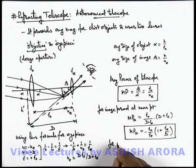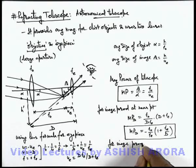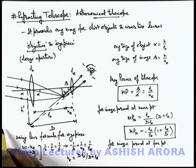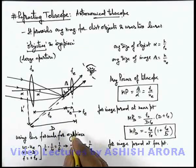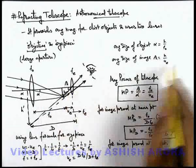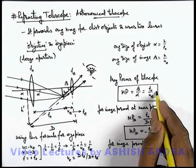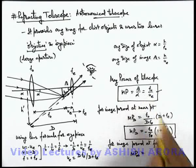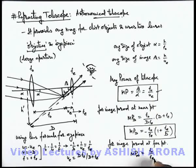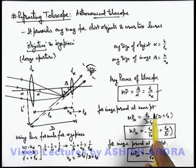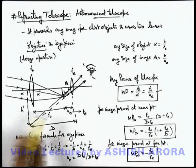If we consider the situation for image produced at far point, then we know well for this image to be produced at infinity, this u_e must be equal to f_e. In this situation, if u_e equals f_e, we can see the value of beta will change to h over f_e. The only difference in this situation is that directly the magnifying power of this telescope for image produced at infinity will be equal to f_o by f_e, and again it is negative because we are observing an inverted image. These are the two magnifying powers for final image produced at near point or at far point in case of a refracting type telescope.